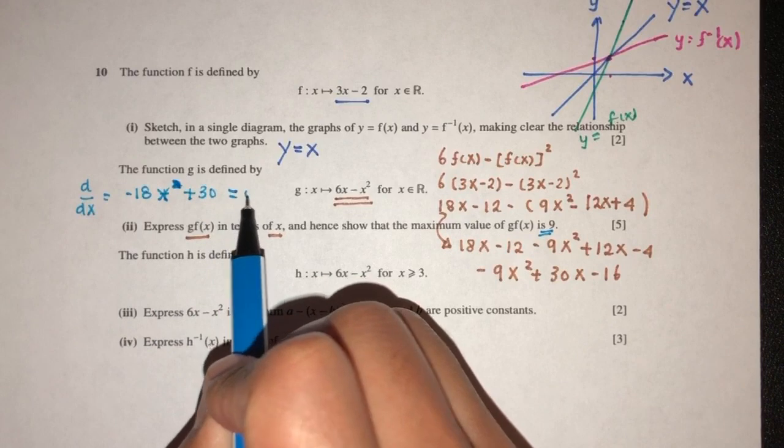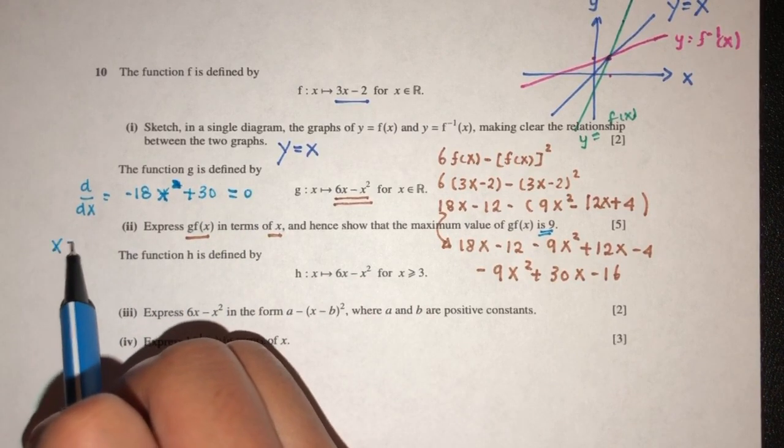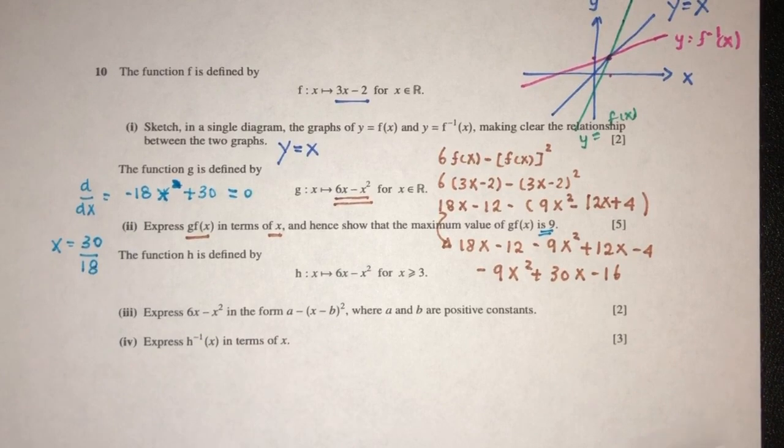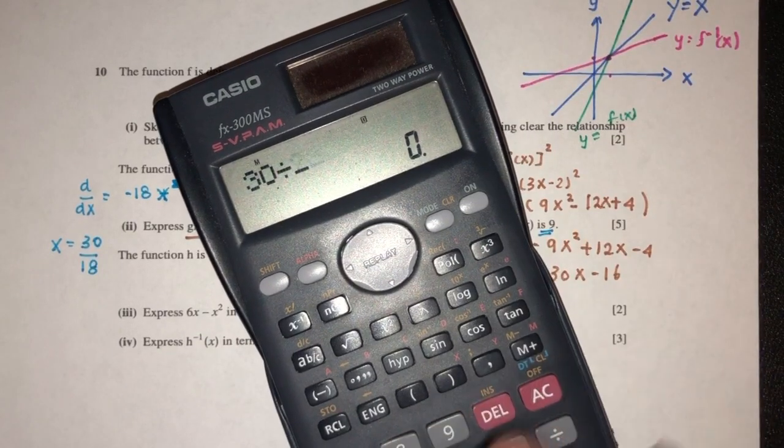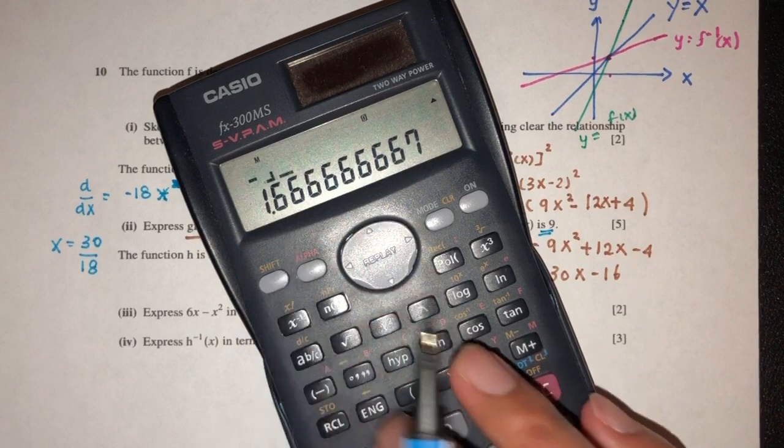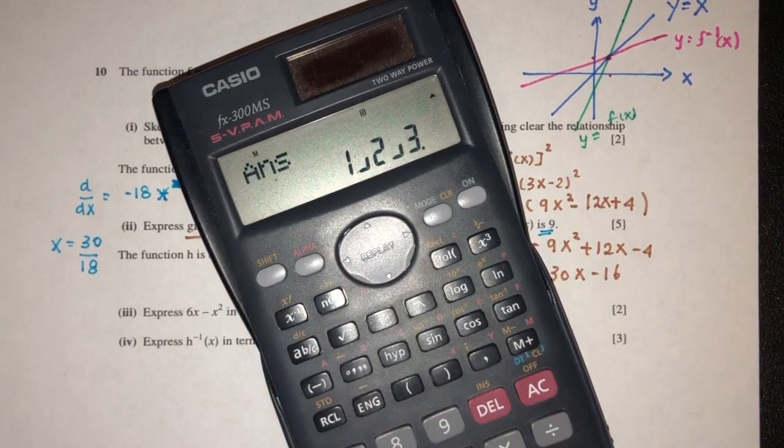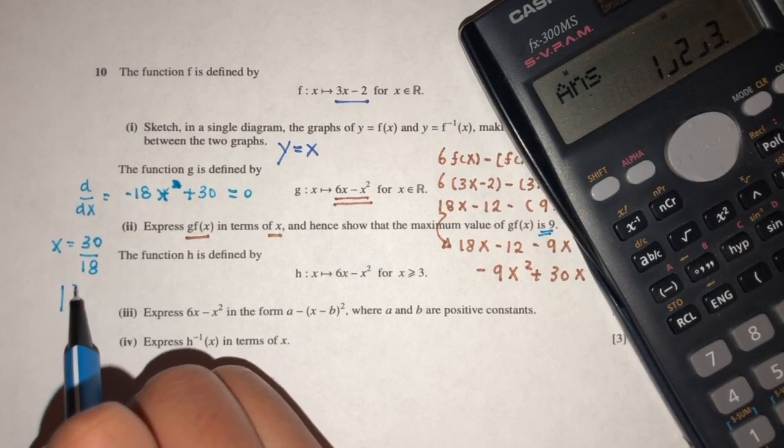We have to equate that to 0. So x will be the value of 30 divided by 18. What is that value? 30 divided by 18, that should be 5/3.